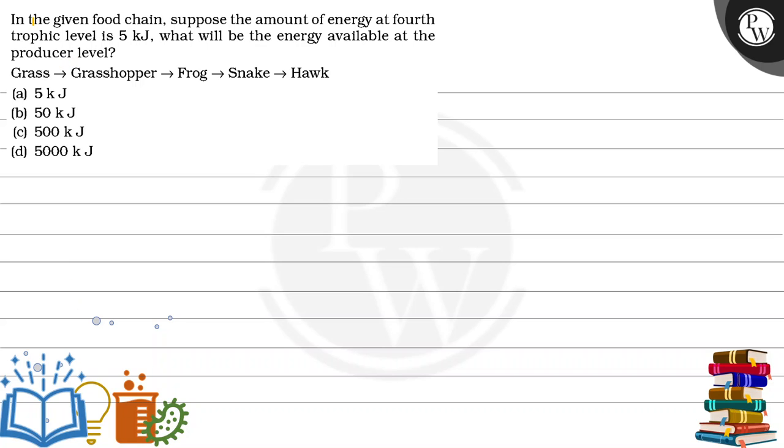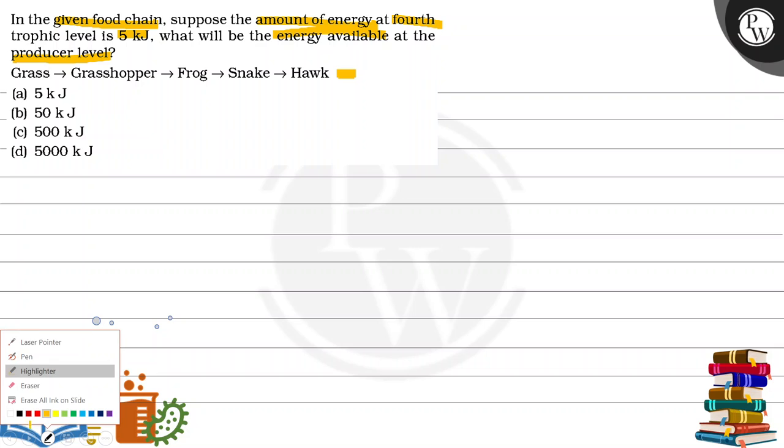Hello, let's read the question. The question says: in the given food chain, suppose the amount of energy at the fourth trophic level is 5 kilojoules. What will be the energy available at the producer level? We are saying that this food chain is given below. If the fourth trophic level is available at 5 kilojoules, how much energy will be available at the producer level?